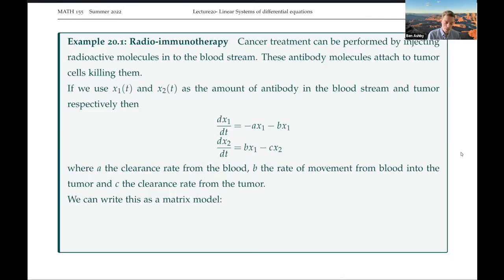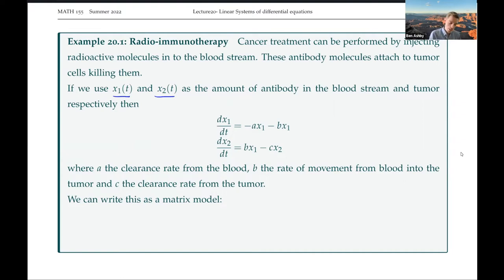As an example, imagine you want to model cancer treatment, where you're injecting radioactive molecules into the bloodstream, and you want to track how those molecules attach to the tumor cells to kill them, and the amount of antibody molecules in the bloodstream. If we use x1(t) and x2(t) as the amount of antibody in the bloodstream and in the tumor respectively...